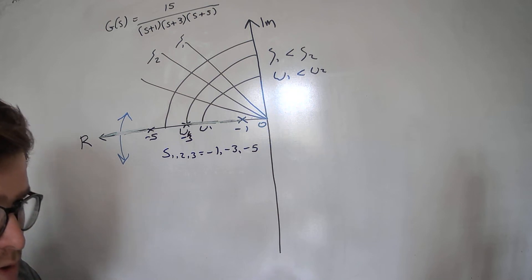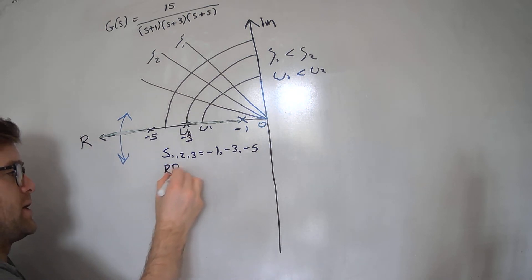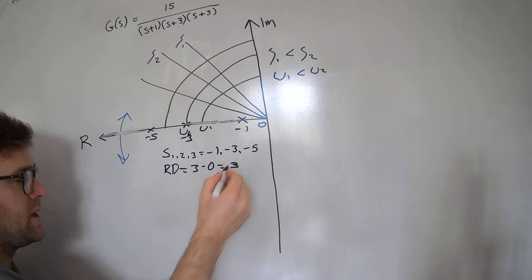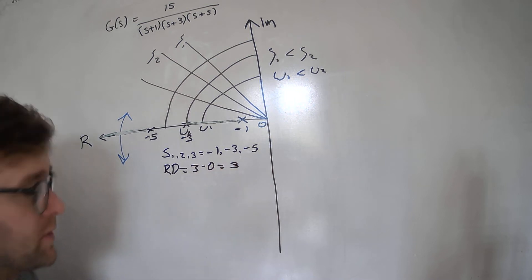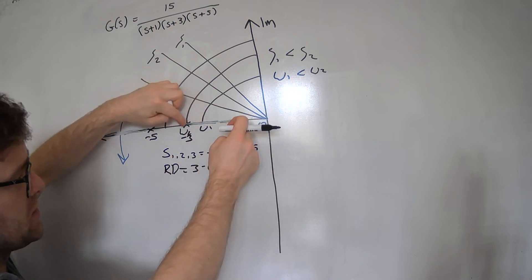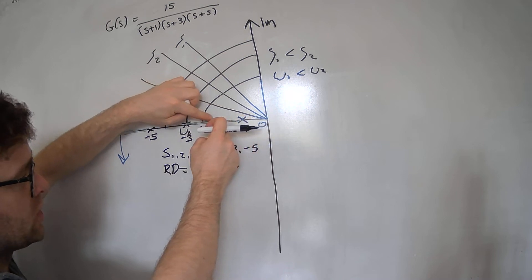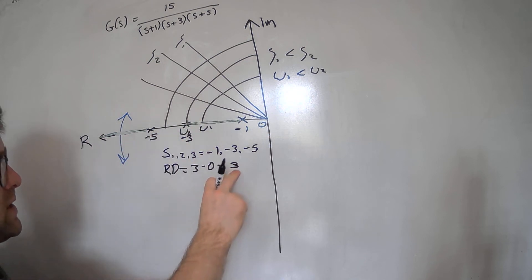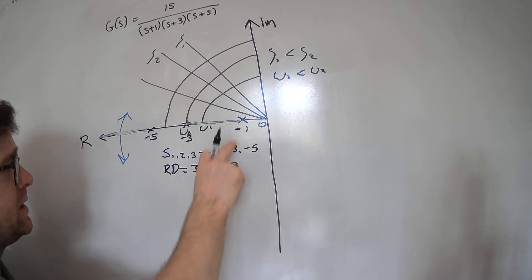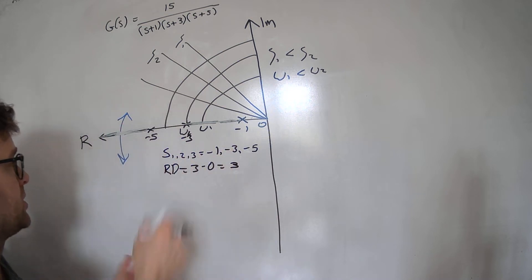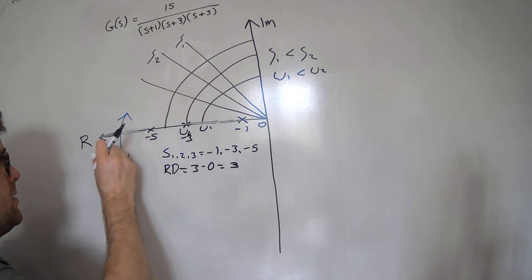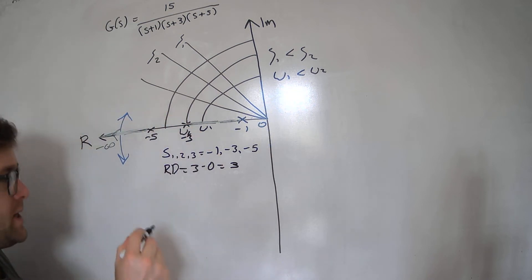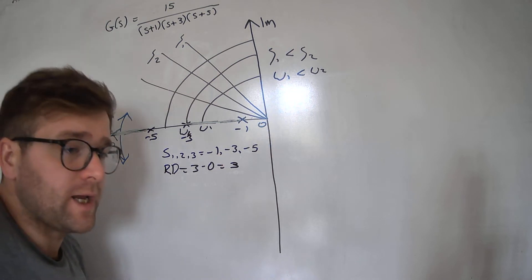The relative degree is the number of poles minus the number of zeros, so three minus zero equals three. Hence three poles will end up at infinity. Two poles will come together approximately at the midpoint between them, break away, and travel along the real axis. This pole will shoot off down the real axis as you increase the proportional control gain.